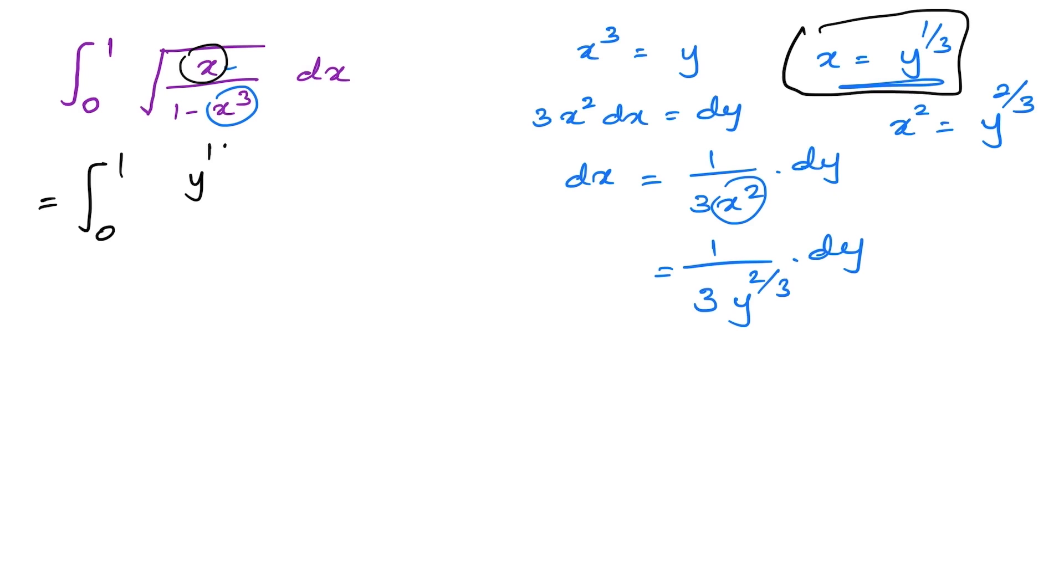We have y to the 1 over 6 over square root of 1 minus x cube, which is y, and then dx. dx we know is 1 over 3. We can write this outside of the integral sign and y to the minus 2 over 3 dy.